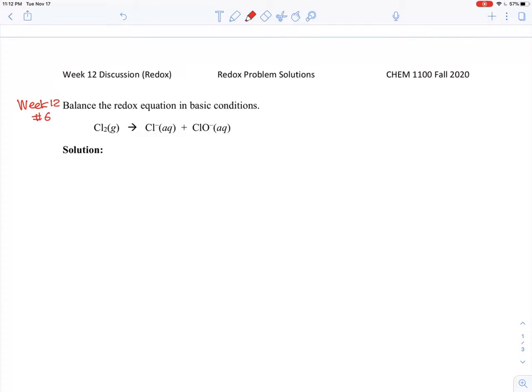Okay, here's another redox balancing equation. This time we want to balance in basic condition. Basic condition means OH minus and H2O are allowed to use - that's what it means for basic.